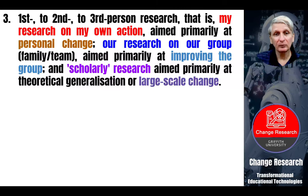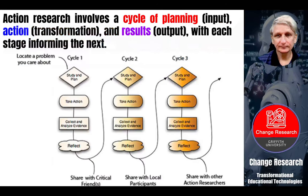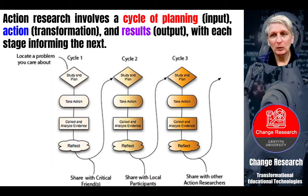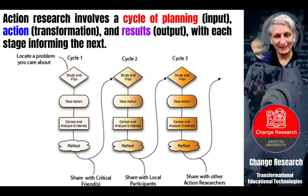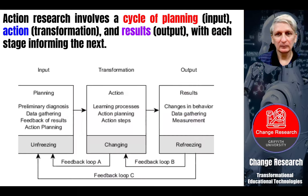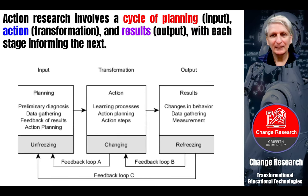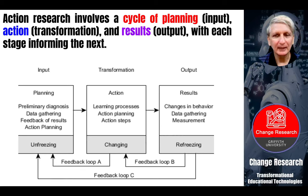Different action research projects can be framed in different ways and can progress through those different stages. It's the result of going through a cycle of planning, where we have some input and action — which is a transformation — and then results or output, which inform the next stage of the cycle. Another way of depicting it is through planning, action, and results, with various feedback loops showing how they impact upon one another.